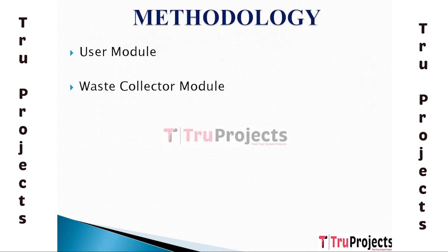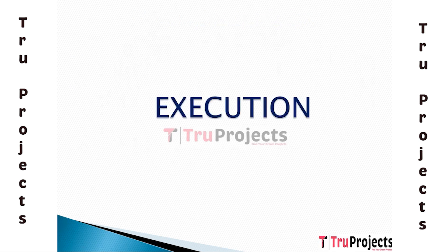The second module is the Waste Collector Module, designed for waste collection personnel. It provides them with information about scheduled waste collection routes, real-time updates on waste pickup requests, optimized routing for efficient collection, and a platform to mark tasks as completed. This module also includes features like navigation, route optimization, and communication tools to coordinate with other collectors or the central management system.